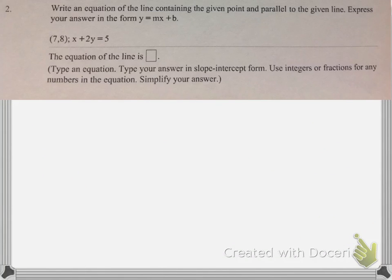All right, number 2 says write an equation of a line containing the given point and parallel to the given line. Express your answer in the form y equals mx plus b. Okay, so they give us an equation of x plus 2y equals 5. We need an equation parallel to this one. So what that means is I need to identify the slope. That's all I need from this equation is the slope.